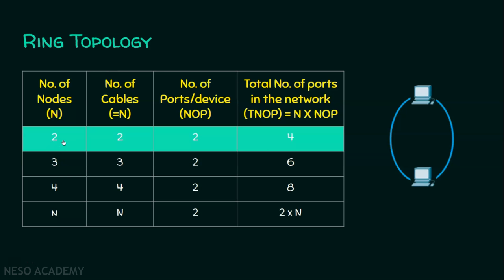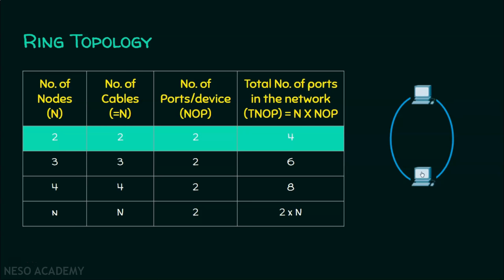Some may have a question: one cable is enough for this scenario, why do we need two cables? Actually, we aren't concerned about peer-to-peer networking — this is a ring topology, which means it should be closed; there should be a cycle. Now we will see a ring topology that involves three nodes.